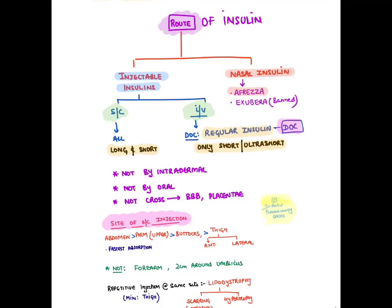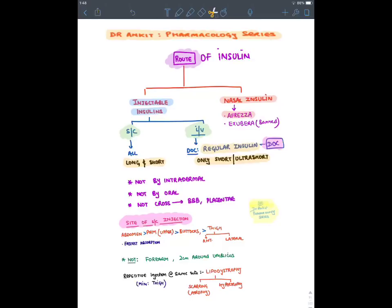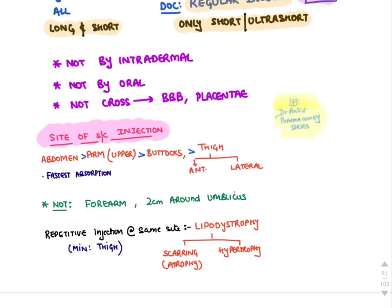IV insulin is given in emergency situations, and regular insulin is the drug of choice for IV insulin. Insulin cannot be given orally — it is a water-soluble molecule. It cannot cross the blood-brain barrier, cannot cross the placenta to enter the fetus, and cannot be given intradermally. The most common sites of subcutaneous injection are the abdomen, upper arm, buttocks, and thigh. The fastest absorption is at the abdomen. Insulin is never given in the forearm or within 2 cm around the umbilicus. Repetitive injection can lead to hypertrophy of fat — lipodystrophy — and sometimes scarring due to allergic reaction.